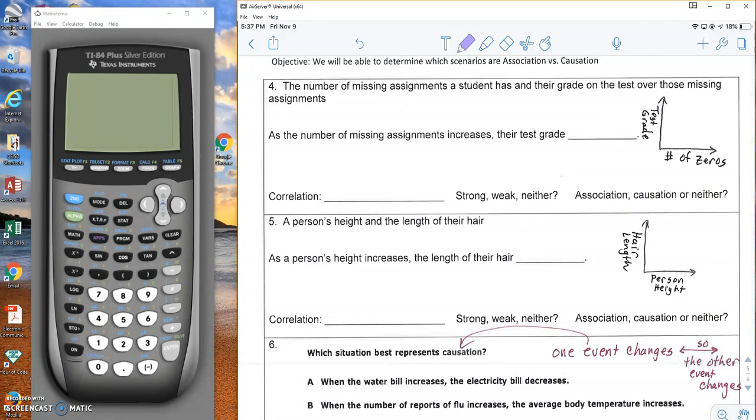Number of missing assignments a student has and their grade on the test over those missing assignments. The more zeros you have, usually the lower your test grade. As your zeros increase because you haven't been doing the work, the test grade goes down because you don't know what you're doing. As your missing assignments increase, your test grade decreases. So this is a negative correlation. Now, it can be pretty weak because it doesn't necessarily, like there are people who forget to bring their assignments in. They're not really good with due dates, but they've done everything. So as your missing assignments get turned in or like you have them at home, but you just keep forgetting to bring them, so you've done them, they're just missing. But your test grade can still be good because you know what you're doing because you've done your work. And these are associated, but one does not necessarily cause the other.